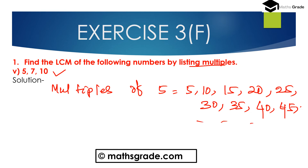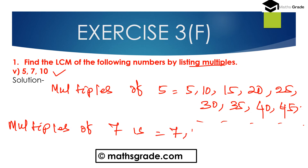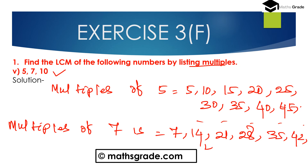Then multiples of 7 are: 7, 14, 21, 28, 35, 42, 49, and so on.